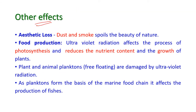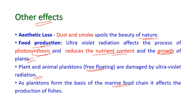Other effects: aesthetic loss — dust and smoke spoil the beauty of nature, especially in tourist places. Regarding food production: ultraviolet radiation affects photosynthesis in plants, reducing nutrient content and plant growth. Plant and animal planktons — the free-floating organisms — are damaged by ultraviolet radiation. Since planktons form the basis of the marine food chain, when they are affected, the production of fish is also affected.